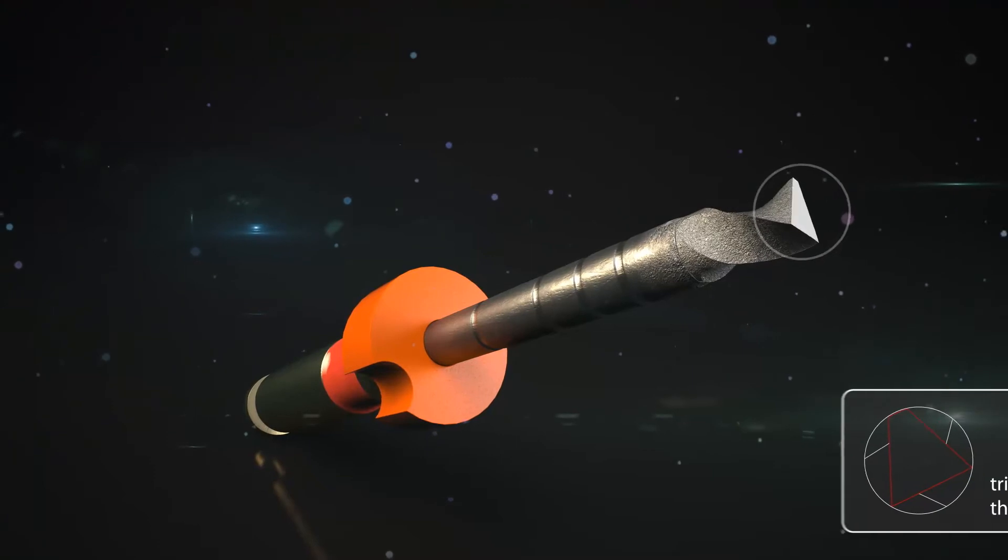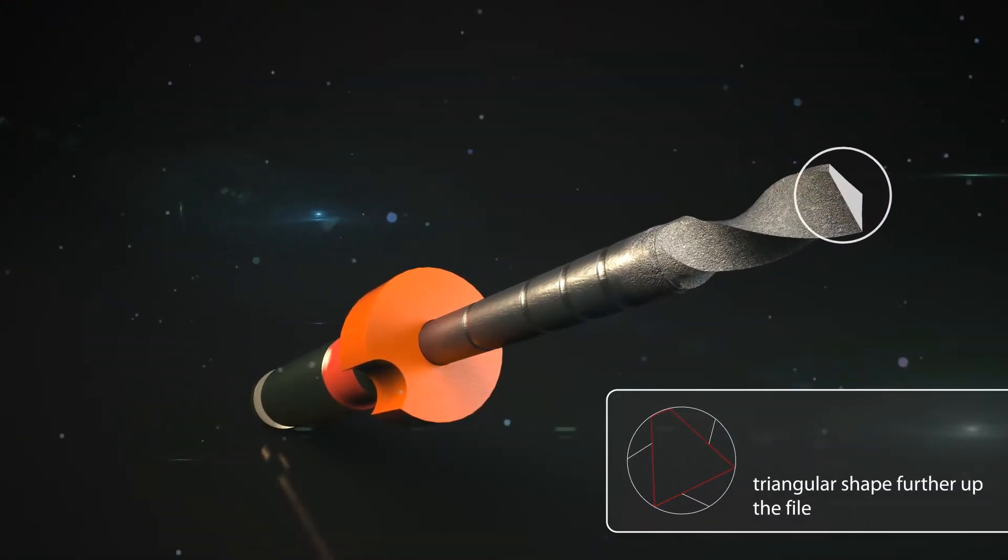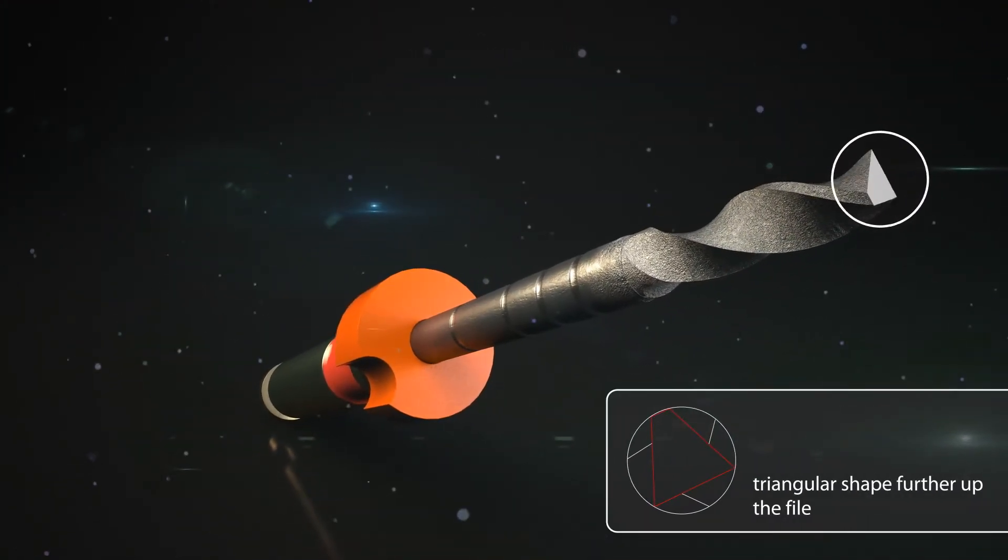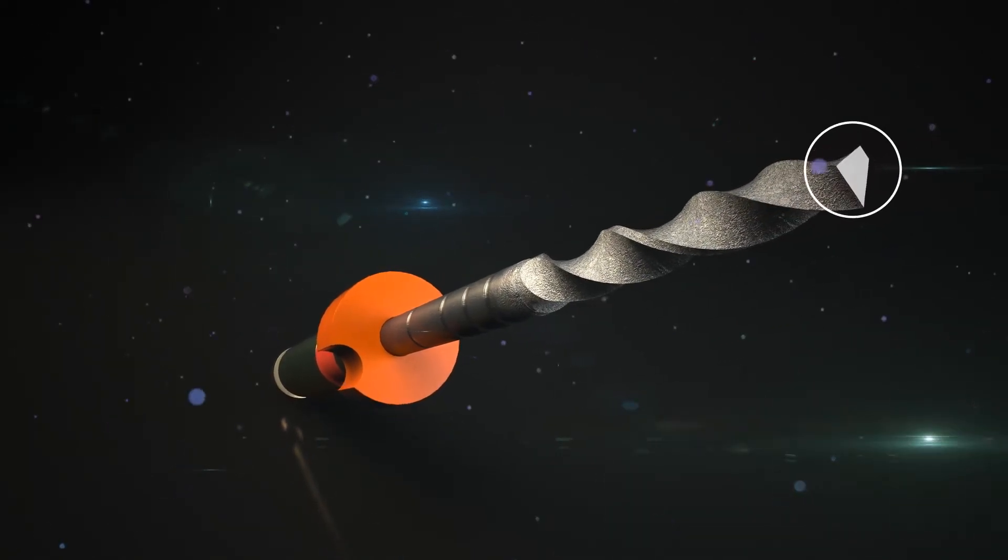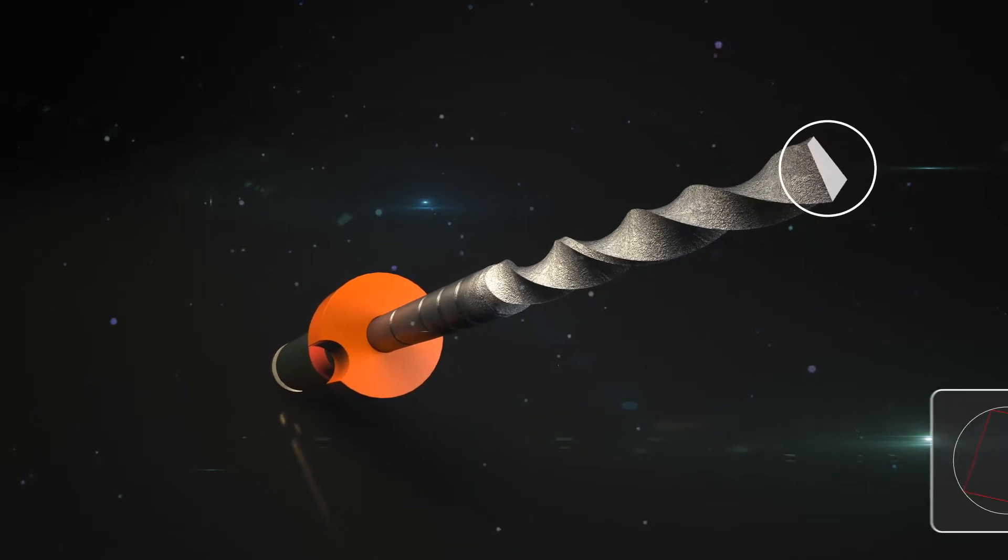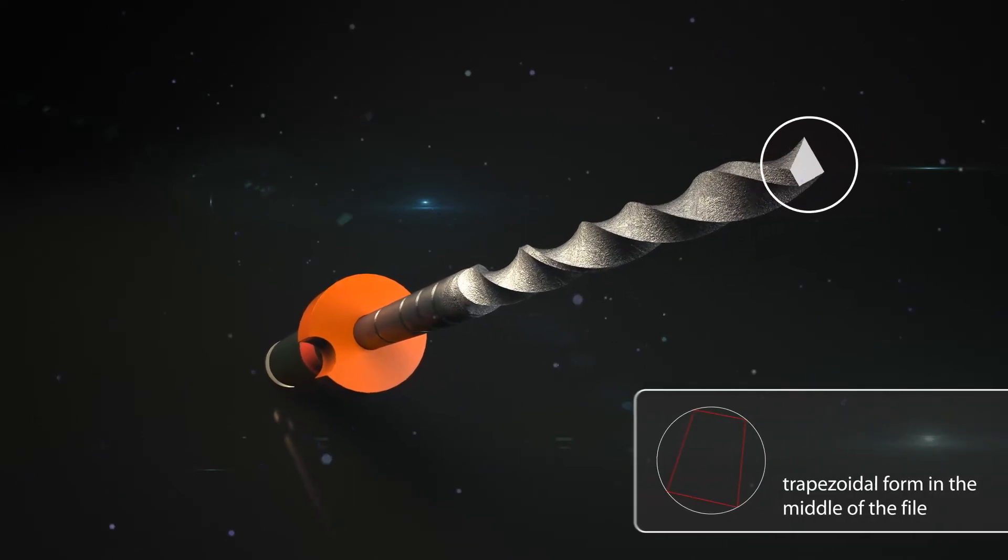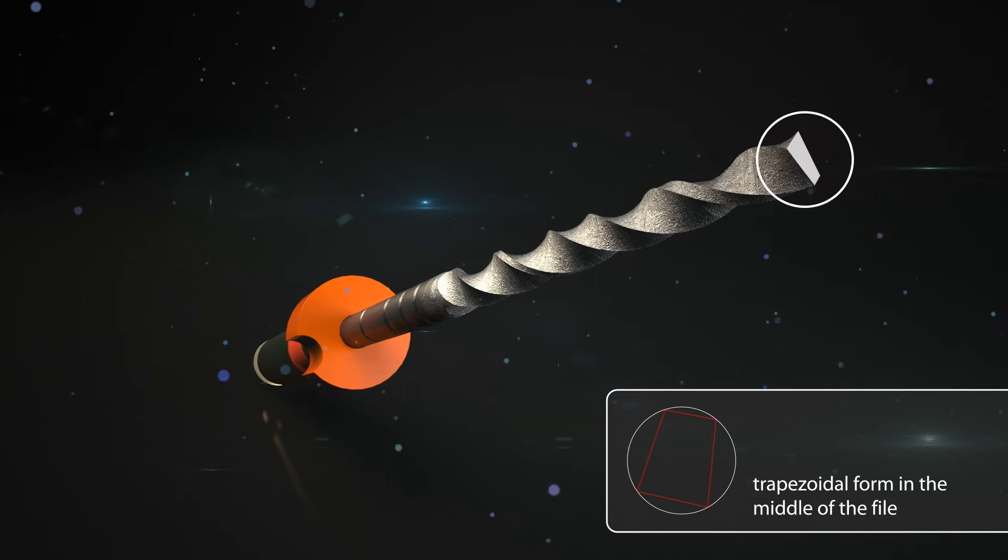The innovative EDM process enables the internal cross-section of the file to vary extraordinarily. The almost triangular cross-section at the lower end of the HyFlex EDM file changes to a trapezoidal form until it approaches an almost rectangular cross-section at the tip.